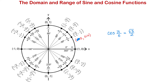Sine of pi over 6 is equal to 1 half. Here pi over 6 is the input and 1 half is the output. Pi over 6 is just one value from the domain of sine and cosine functions, but let's see what other values these two functions can take.